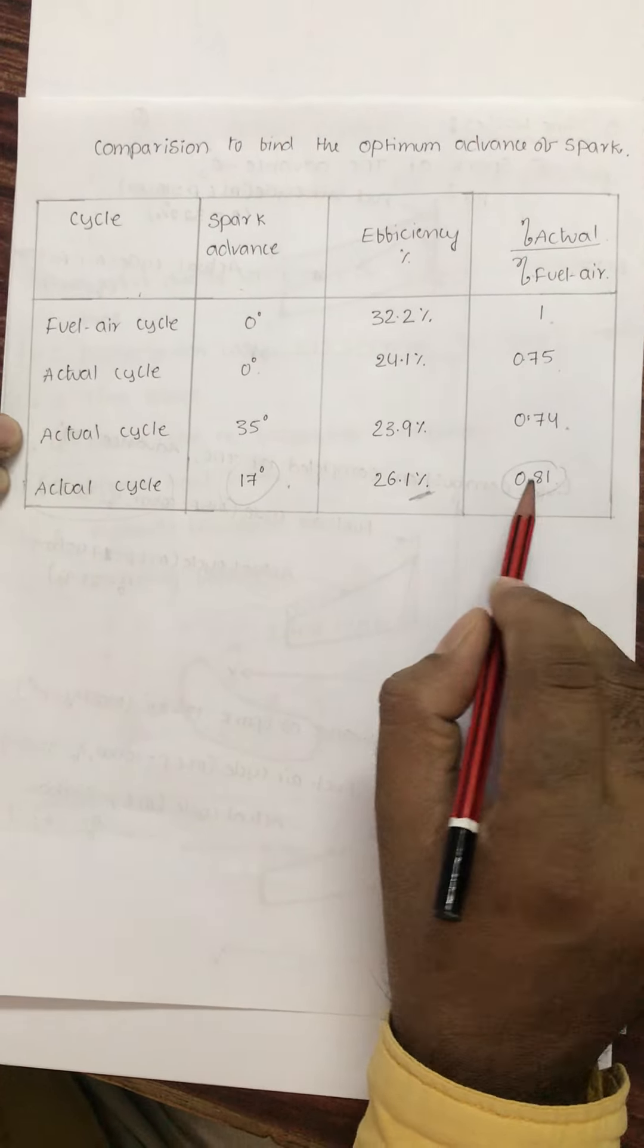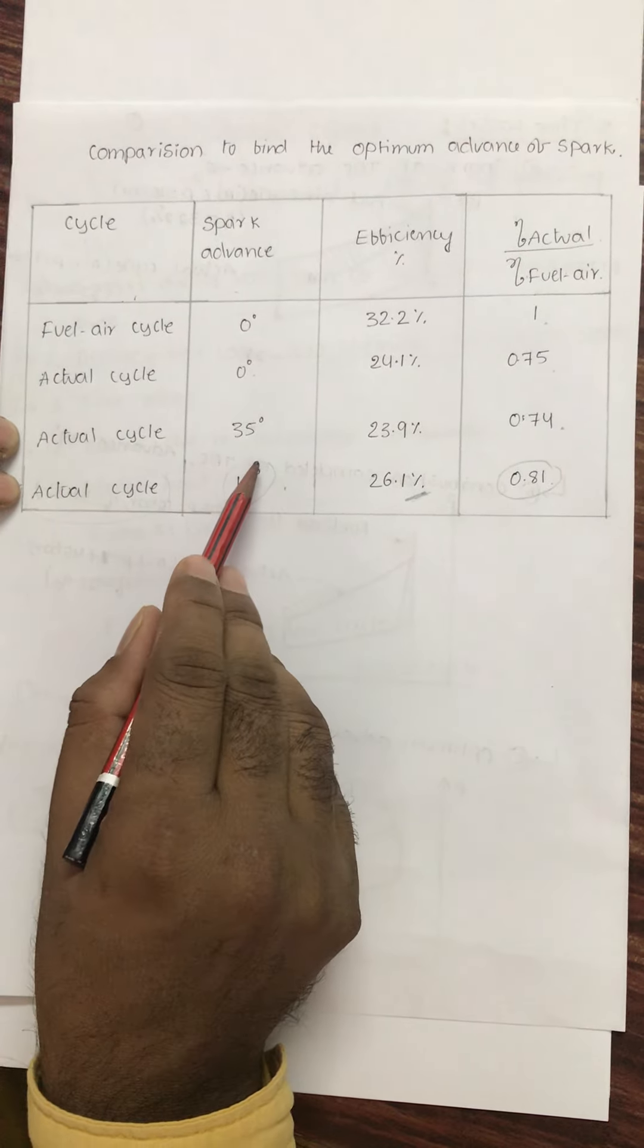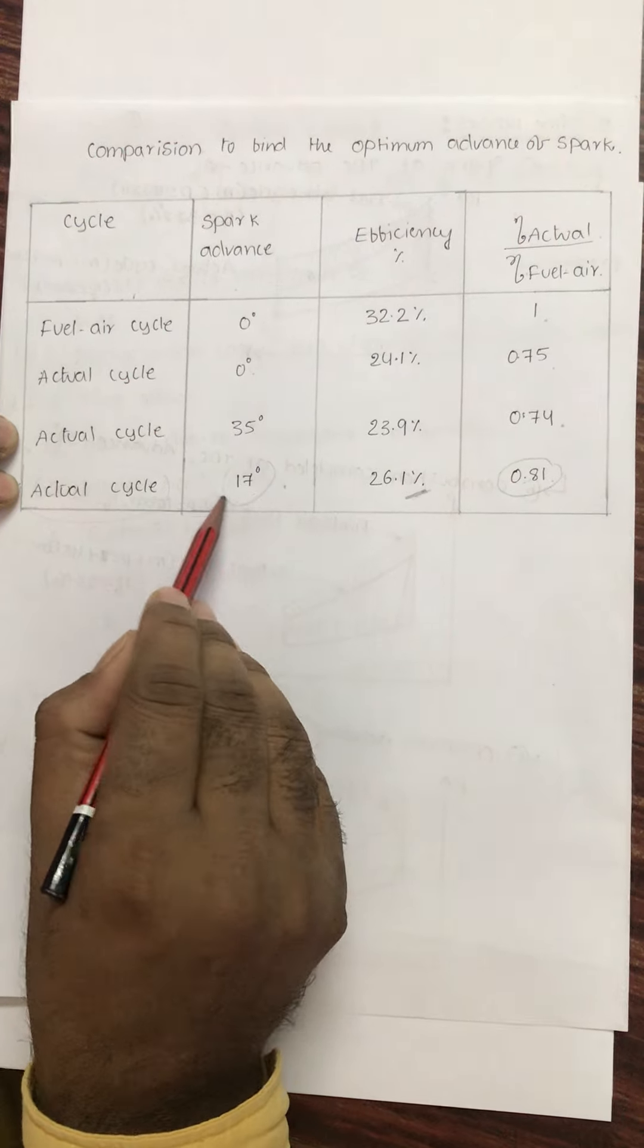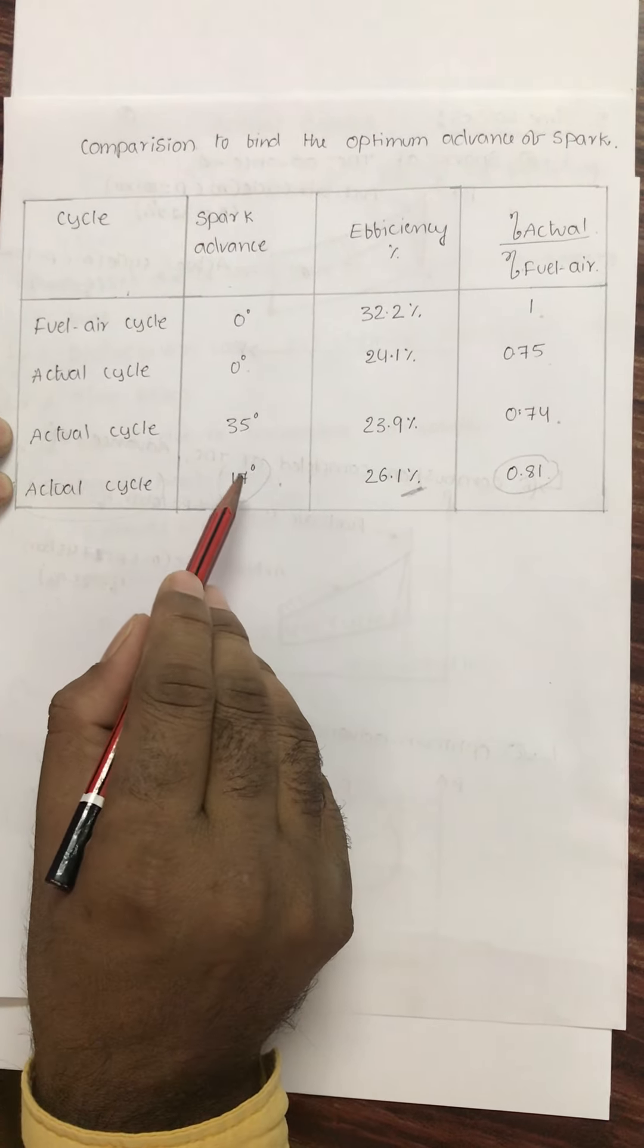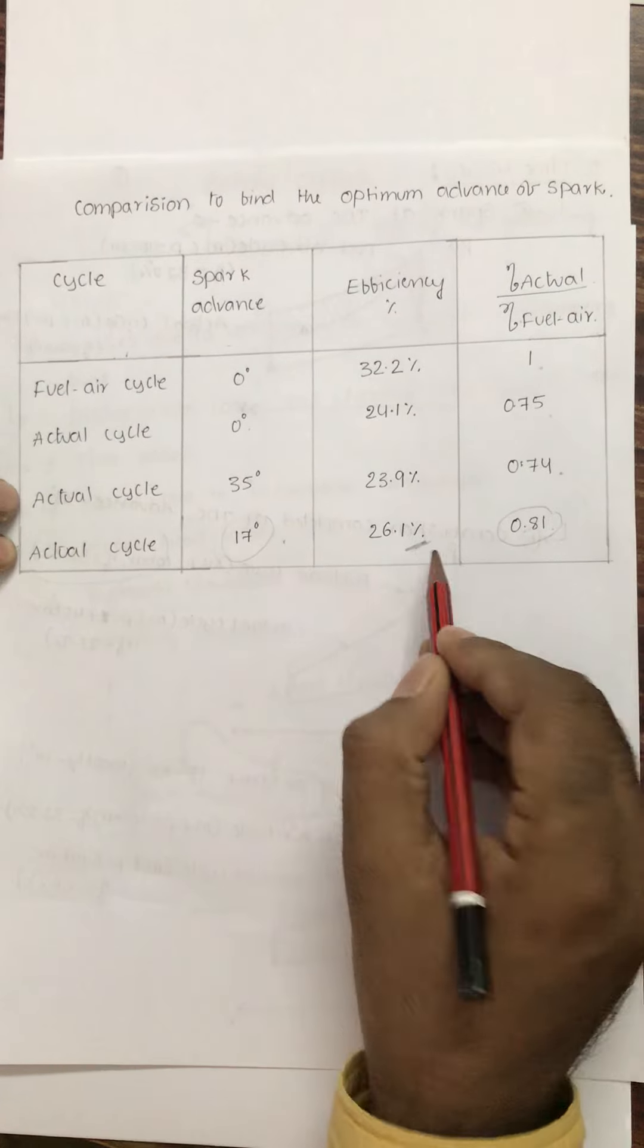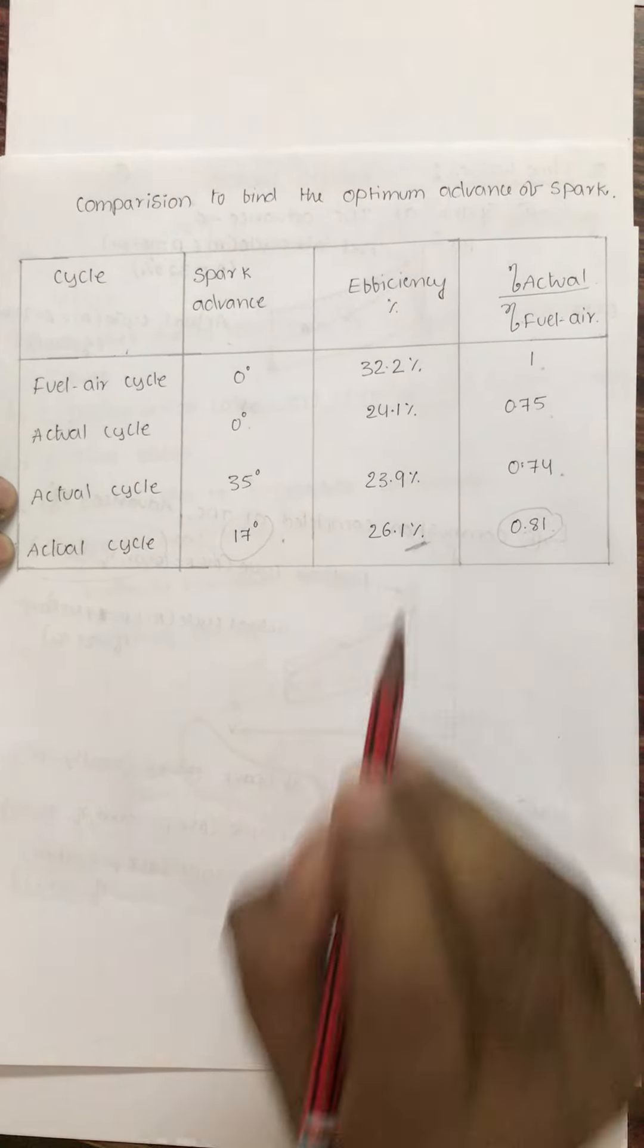This gives a ratio of 0.81. So the advancement of spark to before TDC is 17 degrees. If I give spark 17 degrees before TDC, I will get the maximum amount of efficiency.